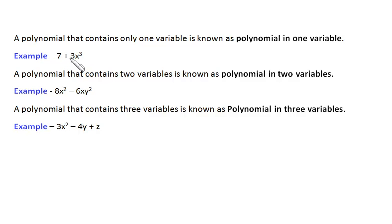Now let's see polynomials in different variables. A polynomial that contains only one variable is known as a polynomial in one variable. Here we see this is a constant part and here we see just one variable, that is x. So this sort of polynomials are known as polynomials in one variable.